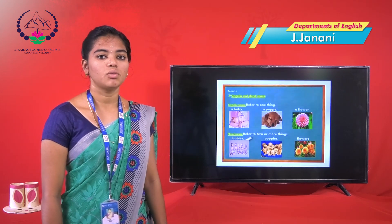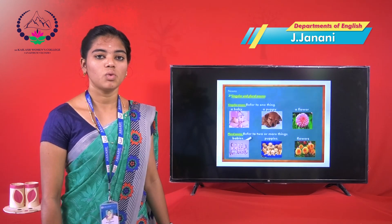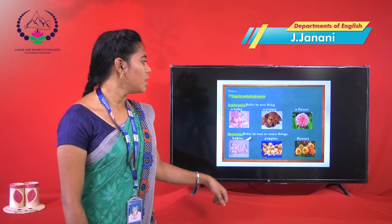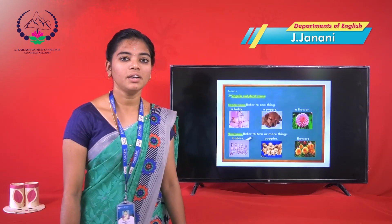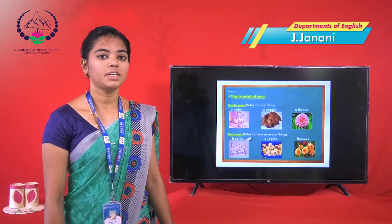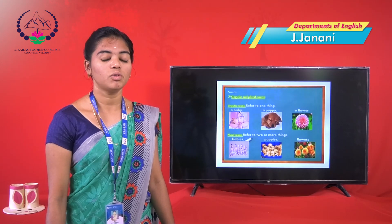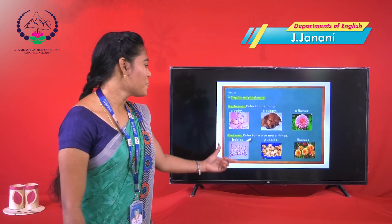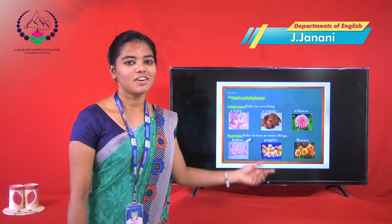Types of noun. First of all, singular noun. Singular noun means it refers to one thing. For example: baby, puppy, floor. And plural noun means it refers to more than one thing. It is called babies, puppies, floors.